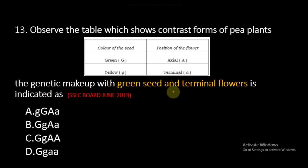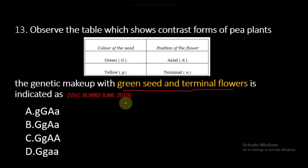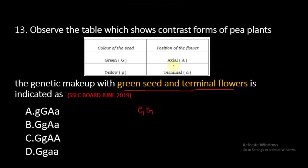The question asks for the genetic makeup with green seed and terminal flower. Green seed is a dominant character, so it is capital G capital G. Terminal flower is a recessive character, so we write it as small a and small a.